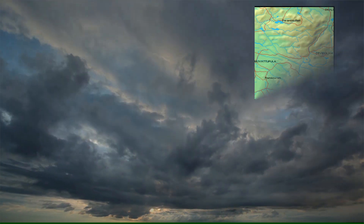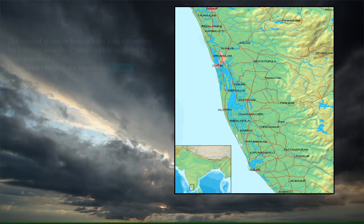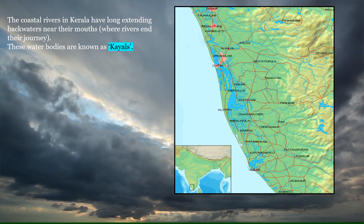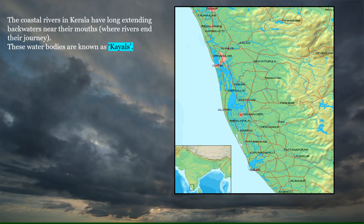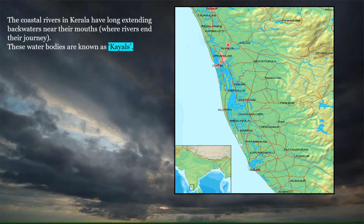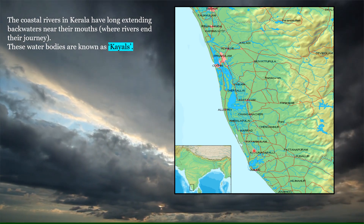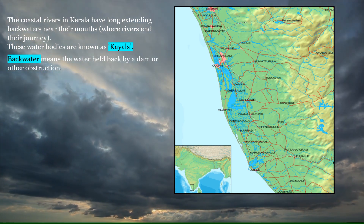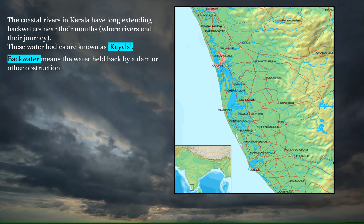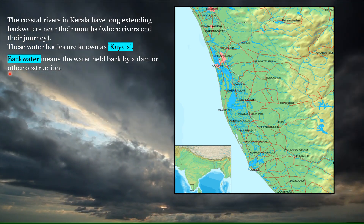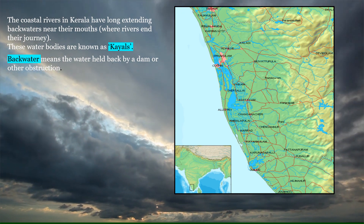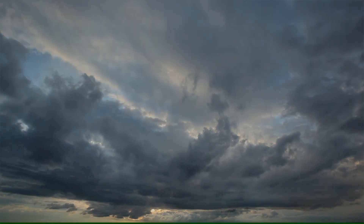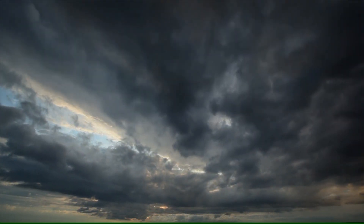The coastal rivers in Kerala have long extending backwaters near their mouths. These water bodies are known as Kayal. Backwater means the water that is held back by a dam or any other obstruction. With this we have come to the end of today's session.